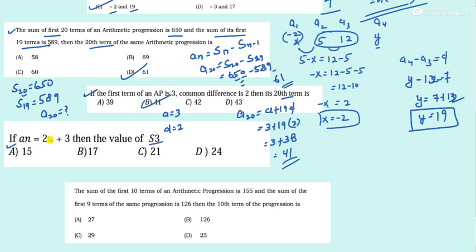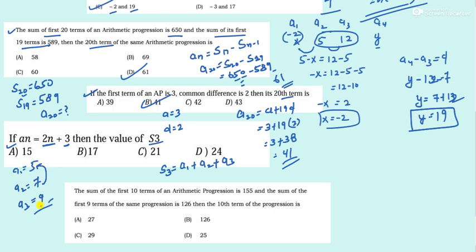Next: If a_n is given, find S3 — the sum of the first three terms: a1 + a2 + a3. Calculate: a1 = 2(1) + 1 = 3, a2 = 2(2) + 3 = 7, a3 = 2(3) + 3 = 9. Sum = 3 + 7 + 9 = 19... sorry, 5 + 7 + 9 = 21. Option C. It's simpler to calculate directly rather than using the big formula.